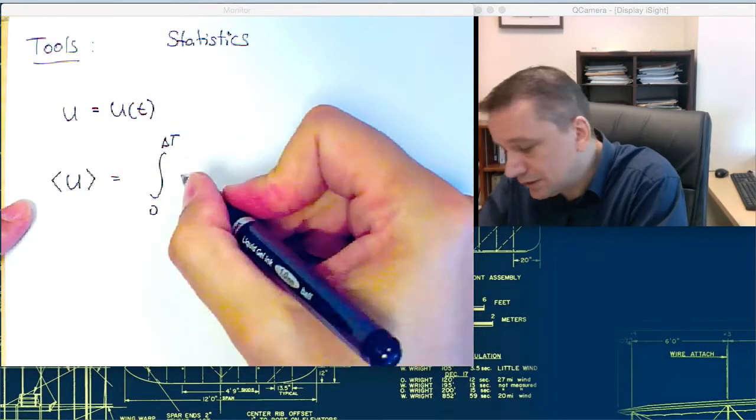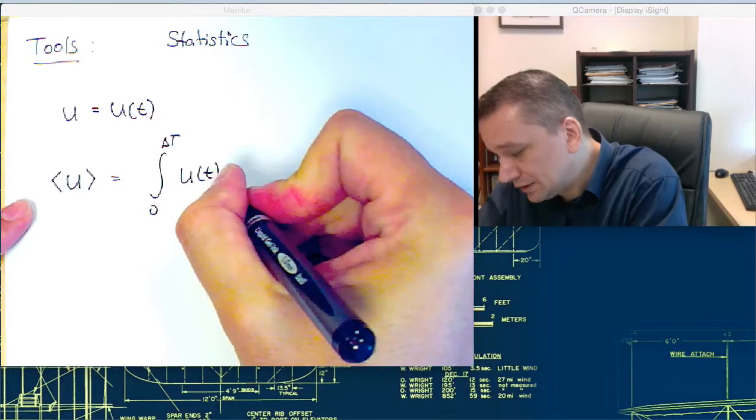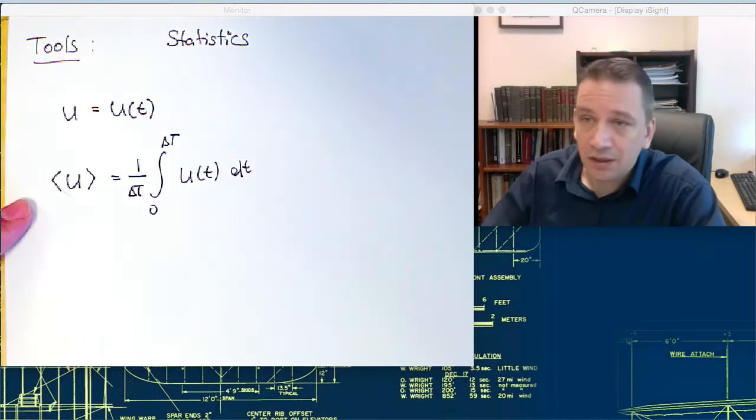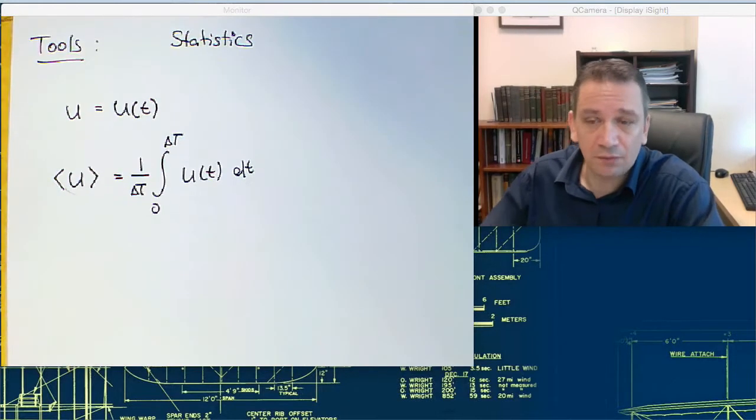So the mean value of u is then the integral from 0 to delta t, the time span, u of t dt, and then 1 over delta t to normalize that. So that's the obvious way.